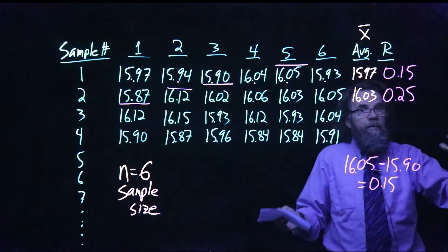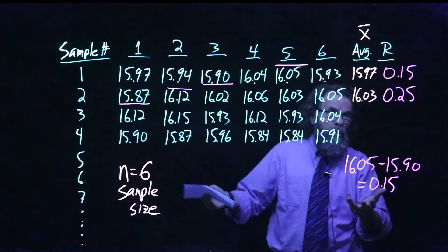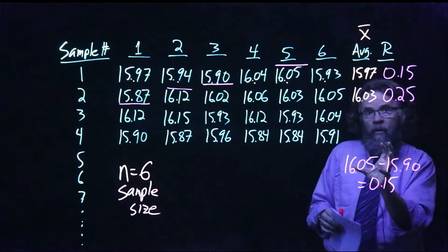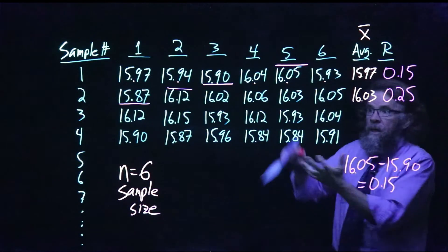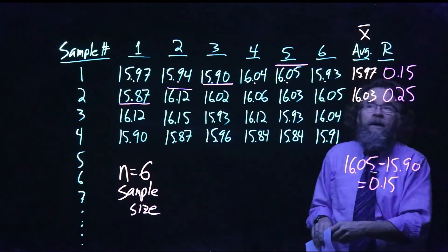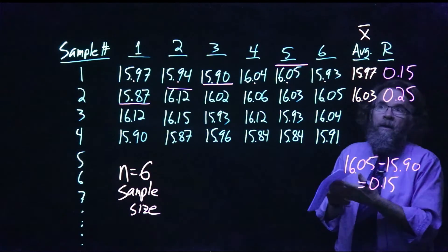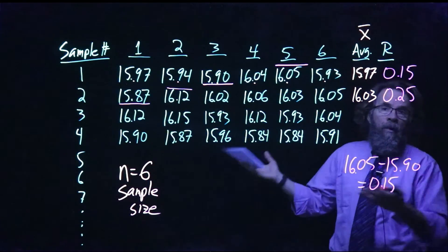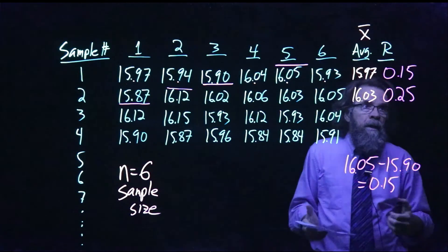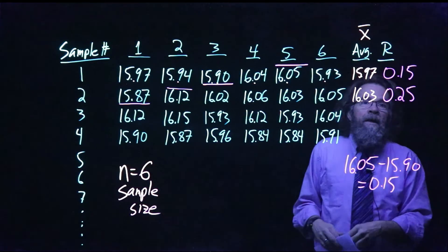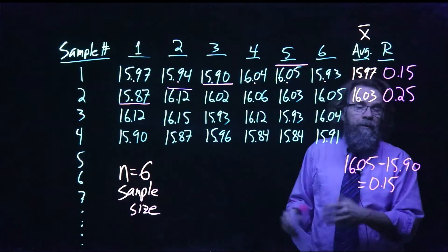But the range chart gives us a different view on that same information. How much variability is there every time? They're not all going to be 16 ounces, but if we discover that we have more variability all of a sudden, well that means something's not working right in the process, and we need to go investigate and do some root cause analysis and fix the problem.